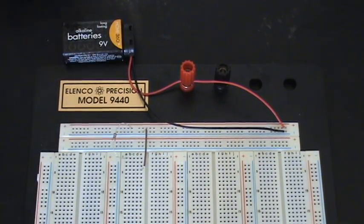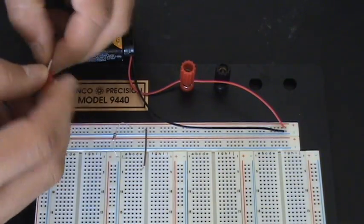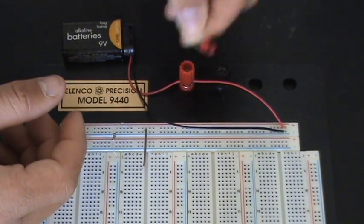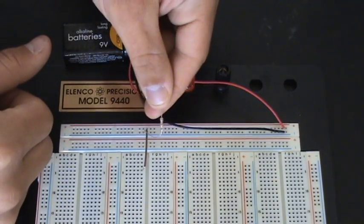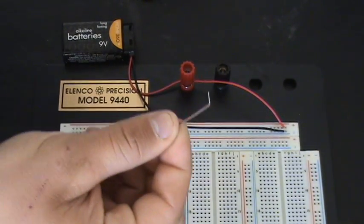Now what you need for this is of course a battery, your battery cables, an LED, any kind will do. A resistor, any kind will do depending on how bright you want your LED light. And of course one jumper wire.